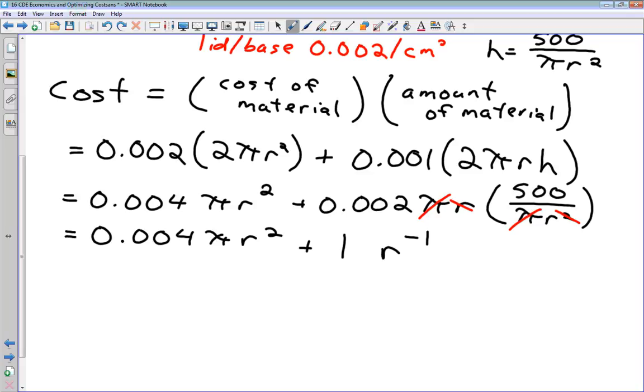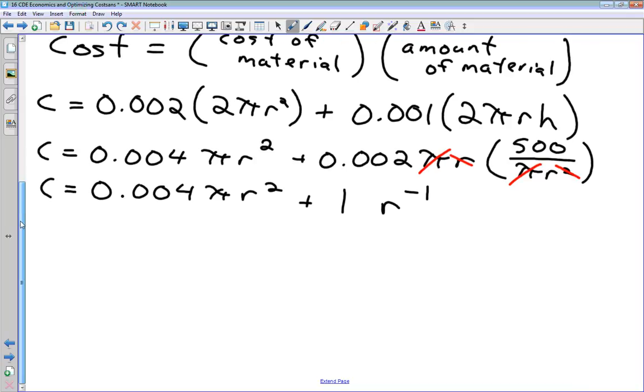There is our cost function. Now we're ready to do our optimization. We want to take the derivative, set it equal to 0, and solve for our radius. Our derivative is going to be 0.008πr minus r⁻², and we want to set this equal to 0.